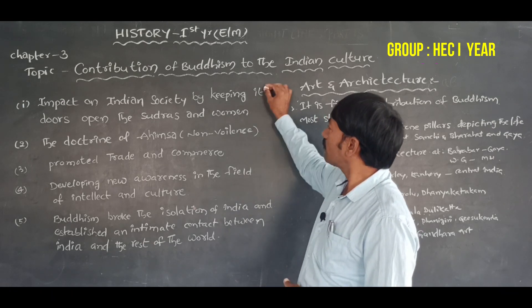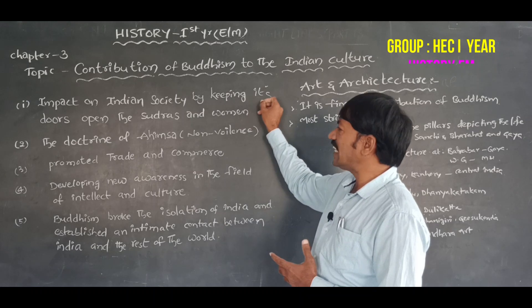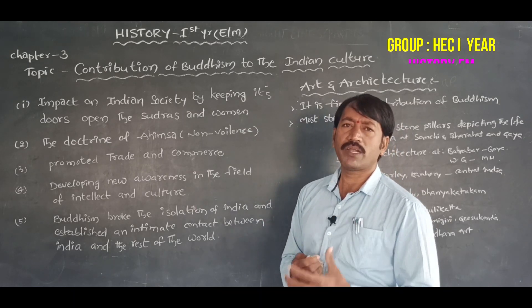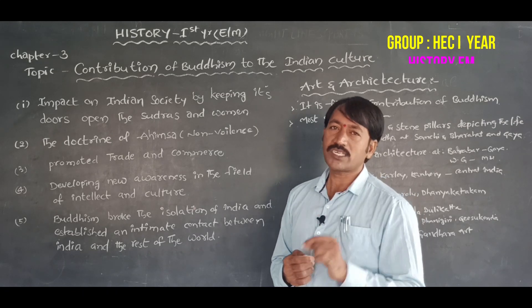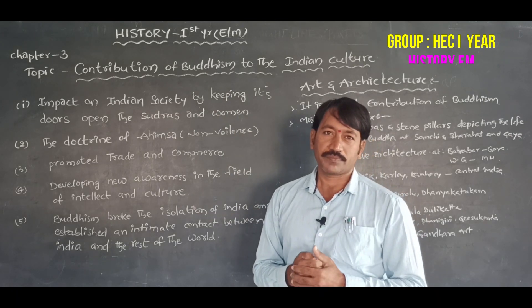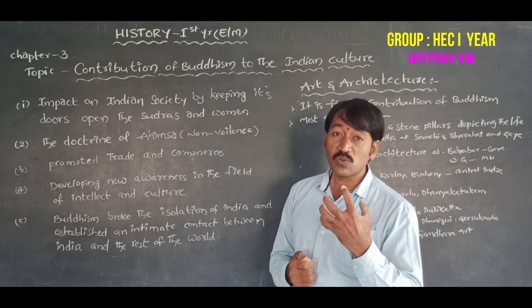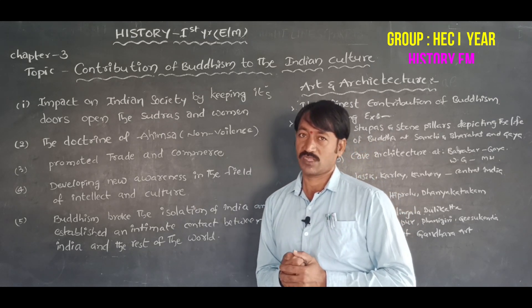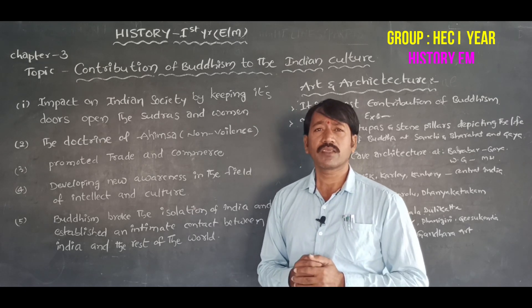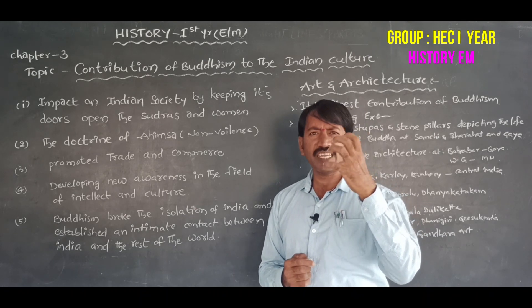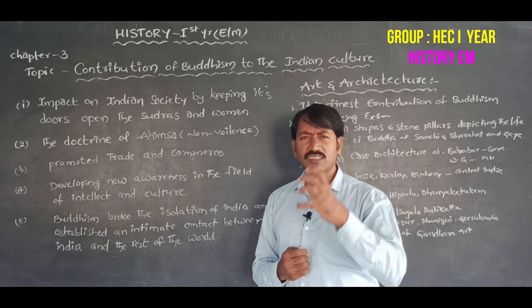The first point is the impact on Indian society by keeping its doors open to Sudras and women. During the 6th century BC, the position of women was very poor in society, and the position of Sudras was also very low, because the Varnasrama system was dominant in Indian society, with Brahmins and Kshatriyas dominating their power.